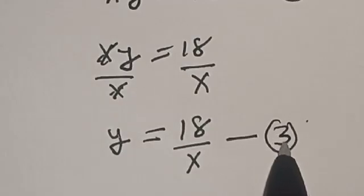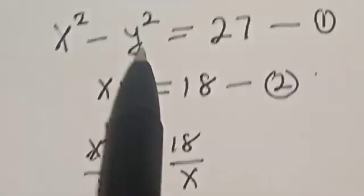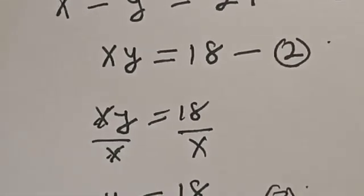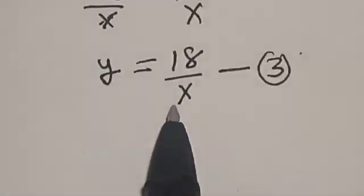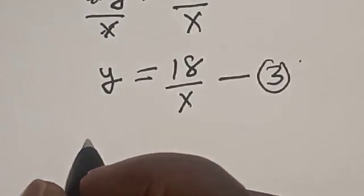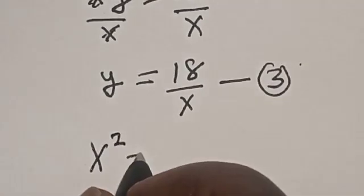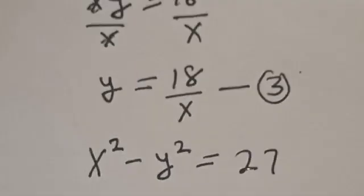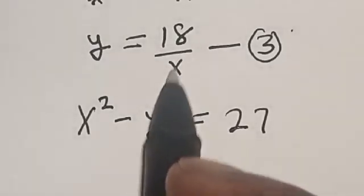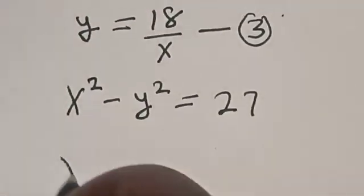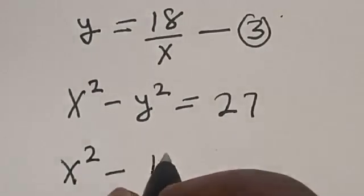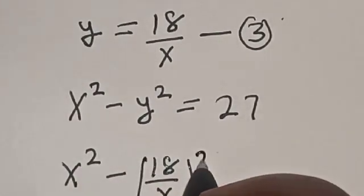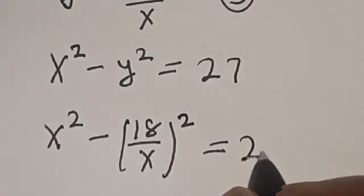Now, substitute equation 3 into equation 1. That is, anywhere you see y, replace it with 18 divided by x. So equation 1 becomes: x squared minus (18 divided by x) squared is equal to 27.